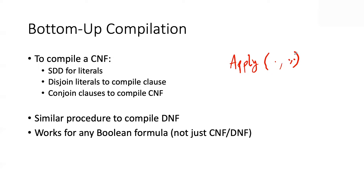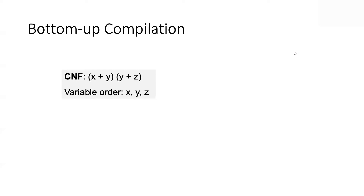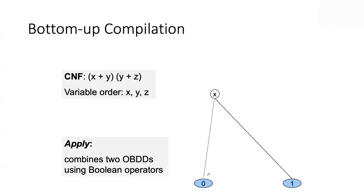Let's dig a bit deeper because it's not as simple as it sounds. To give a sense of one main issue, let's do a quick trace of bottom-up compilation of an OBDD. I'm compiling a CNF with two clauses using the variable order x, y, z. We generate an OBDD for the literal x — if x is true it's one, if false it's zero — then do the same for y, and then disjoin these two OBDDs using apply.